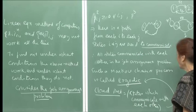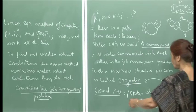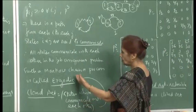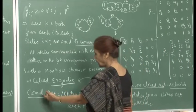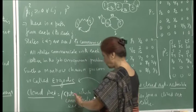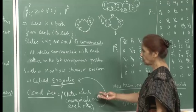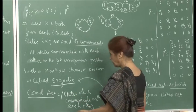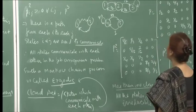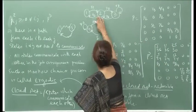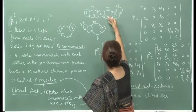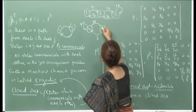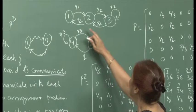Since p_ij(2) is positive for all i, j, all states of the job assignment problem communicate with each other. Such a Markov chain is called ergodic. We define a closed set as a set of states which communicate with each other. For the job assignment problem, the closed set consists of all states 1, 2, and 3. But it is possible to have more than one closed set where all states do not communicate with each other.